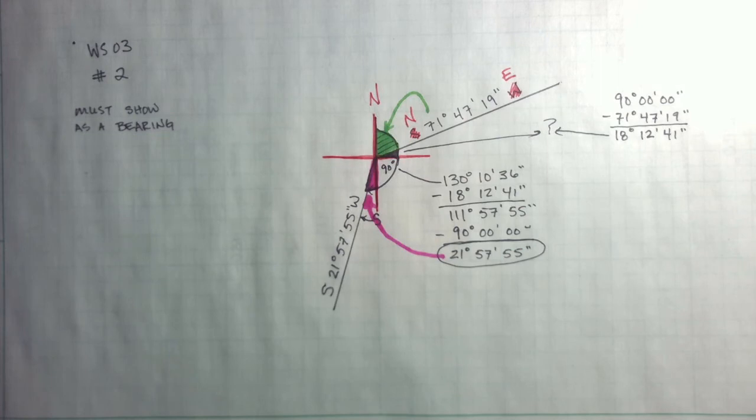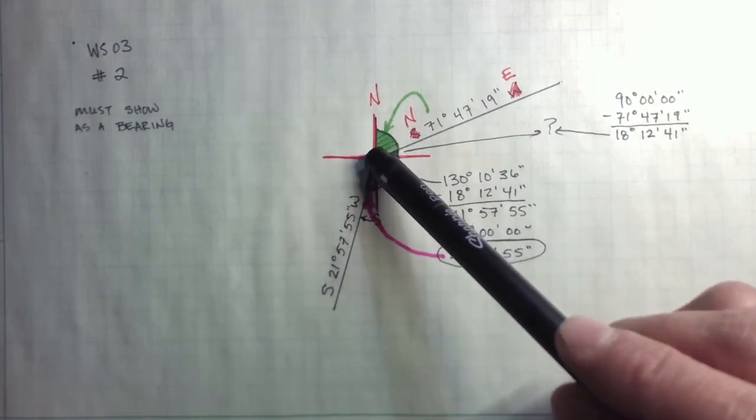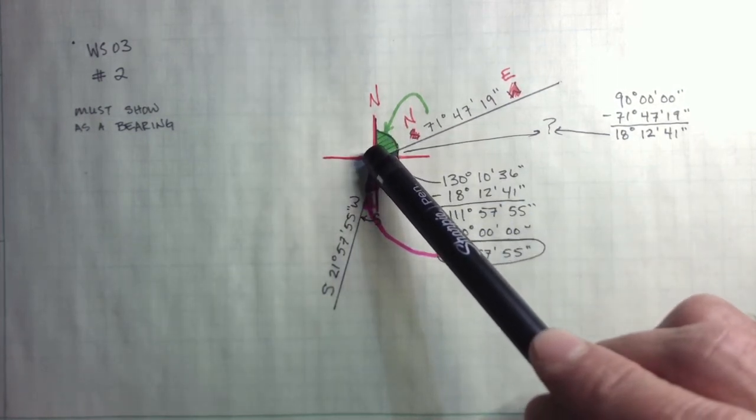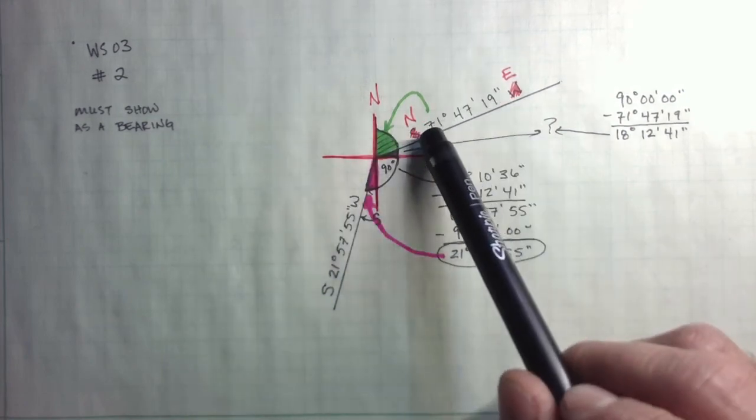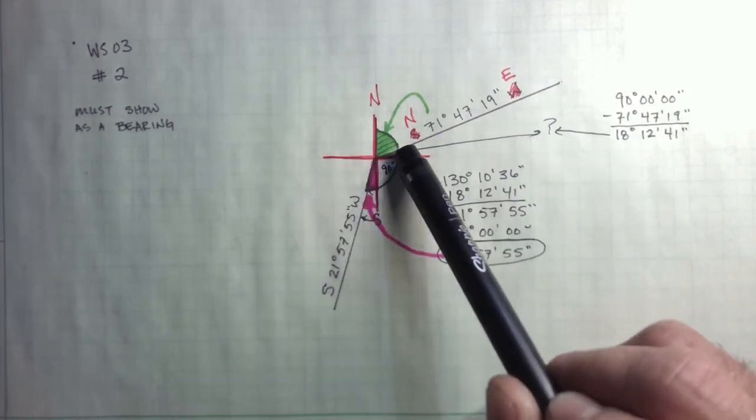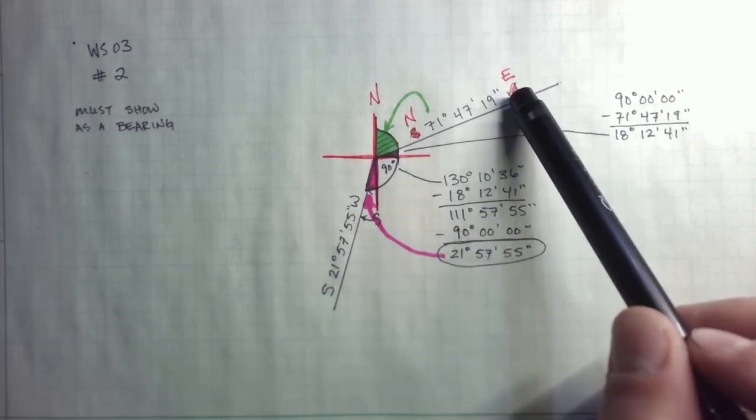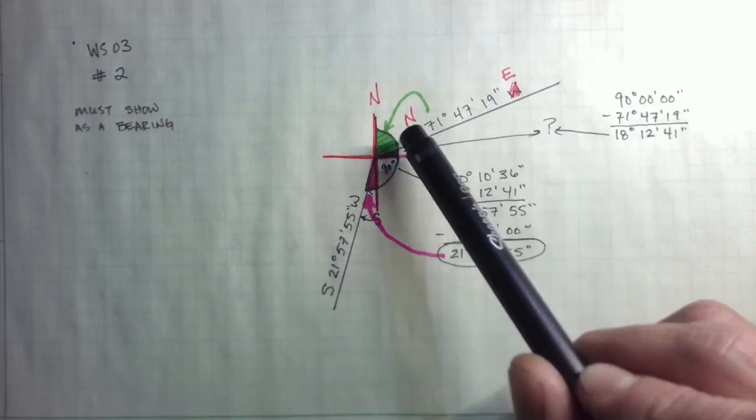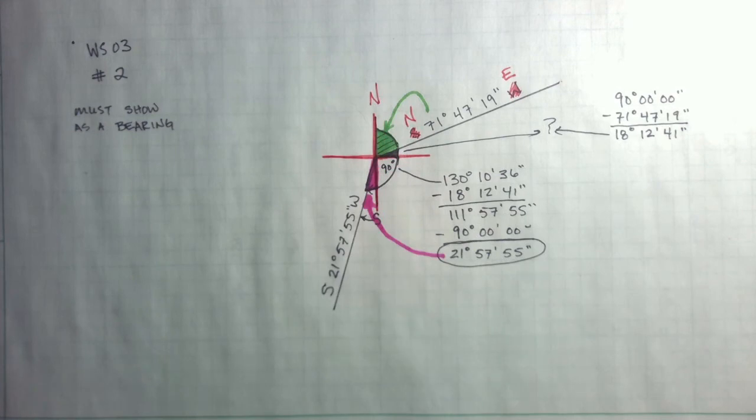So, again, the key to me is draw yourself a little picture and start solving for the slices of the pie. Put your compass rows at the intersection of the two lines you need to solve. And then ask yourself, does the bearing make sense with the compass rows at that point? In this case, the bearing did not make sense. So I had to reverse the direction.